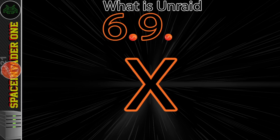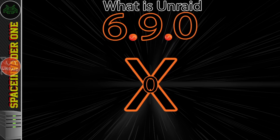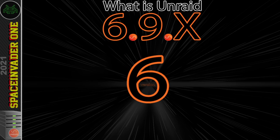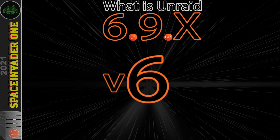At the moment Unraid is on version 6.9. The 6 is Unraid version 6. For those new to Unraid, there have been many versions before — the lower the number, the older the version. We've had version 5, 4, 3, and going right back even further.